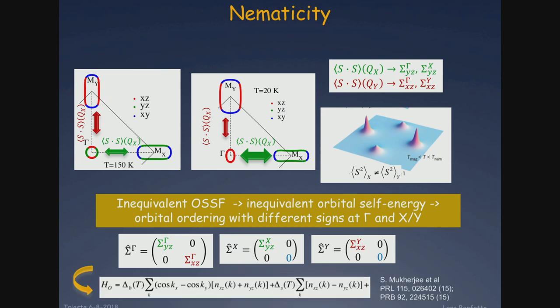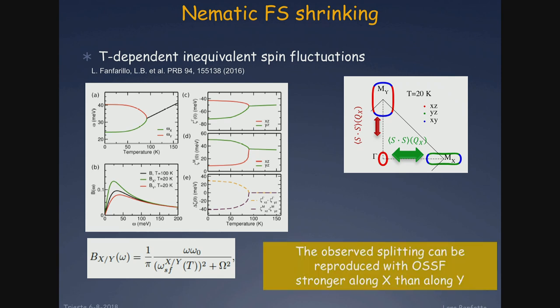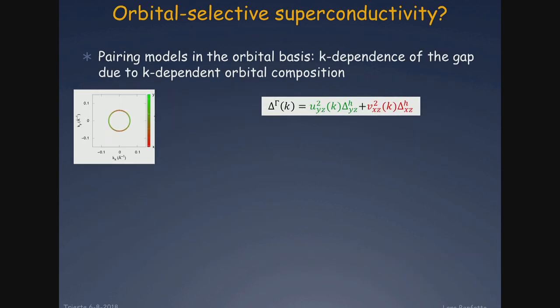Within this scenario, all that we observe as orbital ordering in the nematic phase of iron selenium can still be a consequence of spin nematicity, if I take into account the self-energy correction of the electrons due to spin fluctuations. With this kind of calculation I can reproduce the typical model that most people take as a starting point for nematicity in iron selenium. To reproduce the data by Veronique Brouet, we modeled spin fluctuations in the nematic phase with different spin masses in the two directions, and found that to reproduce the observed splitting we need fluctuations stronger along X than along Y.